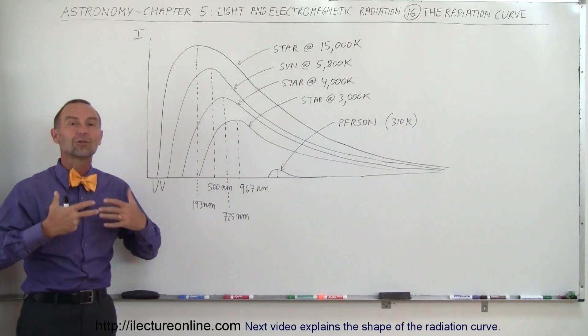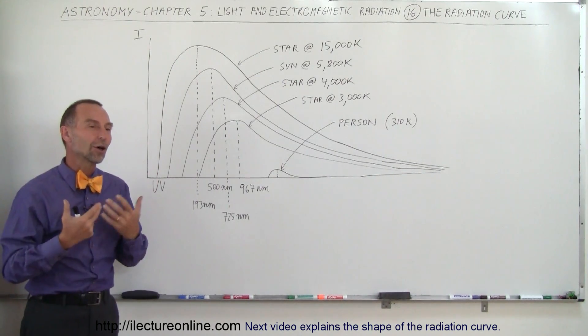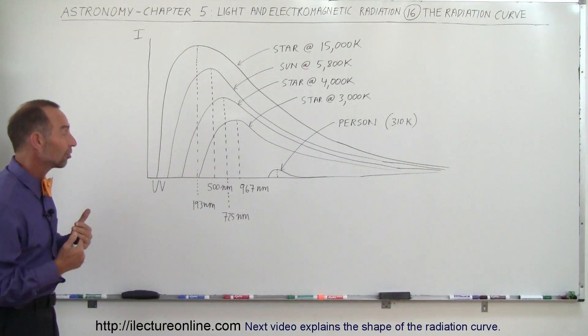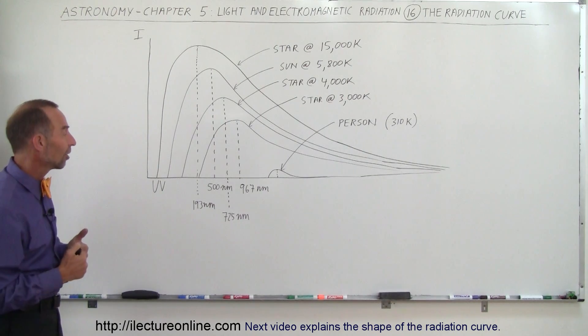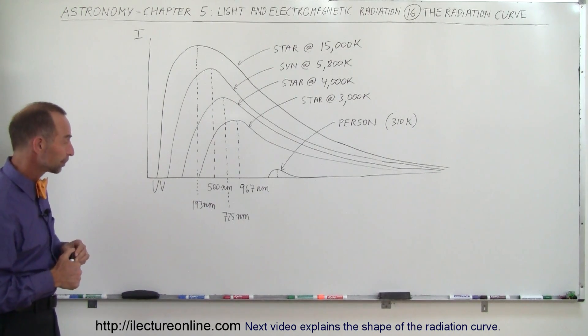We probably could not live near a star that is that hot, simply because too much ultraviolet radiation would be coming from that star — it would be very difficult for life to exist on a planet near a star like that.